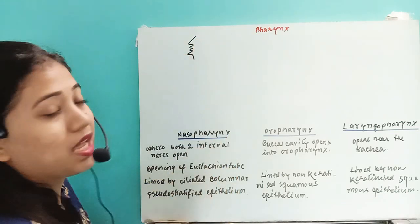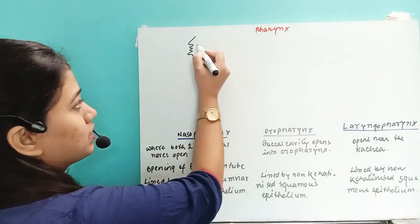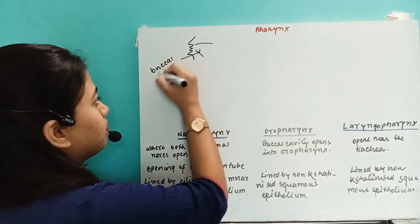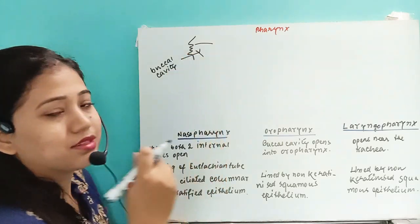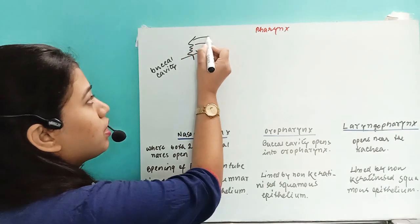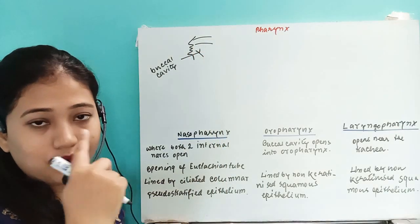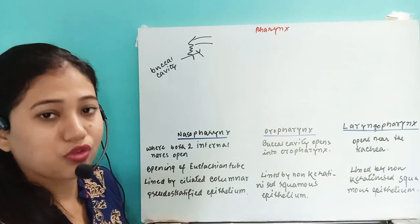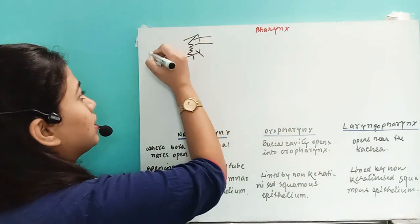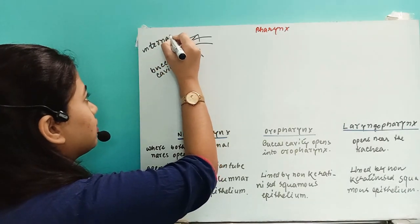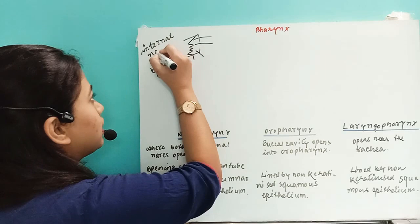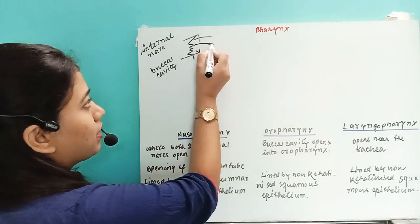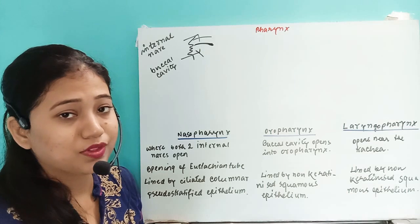Just above the buccal cavity we have part of the respiratory tract. There is the external nare, then the nasal chamber, and we have two nasal openings — also called nostrils. After that we have the internal nares, two internal nares for both nostrils. The nasal chamber is separated from the buccal cavity by the palatine bone.